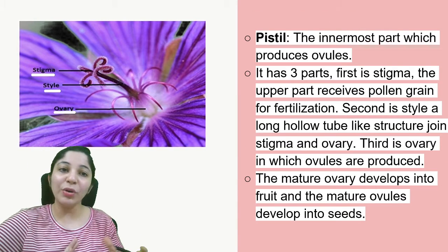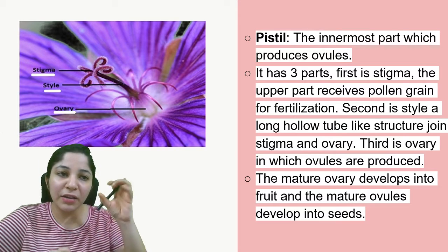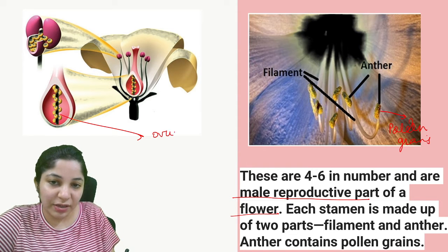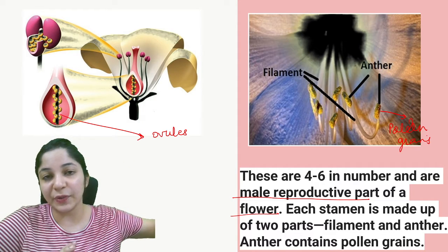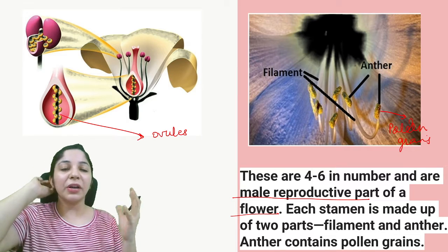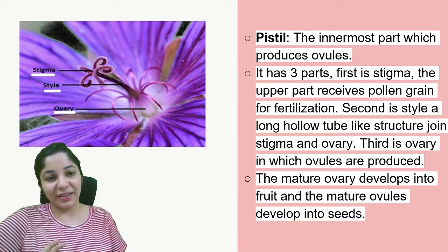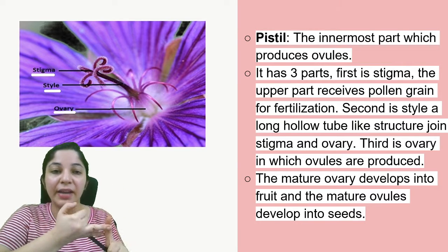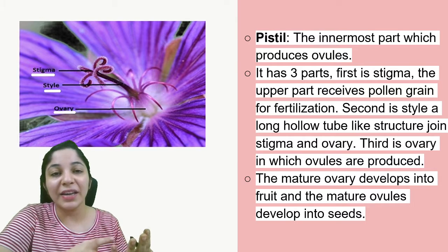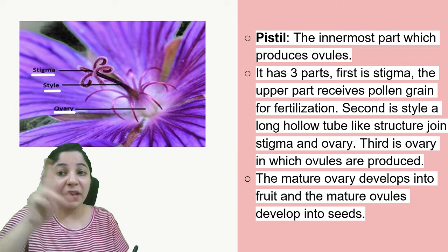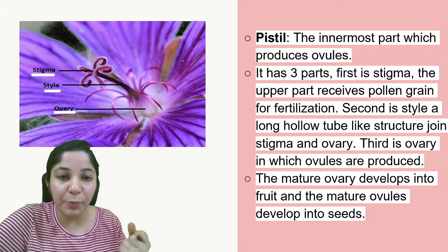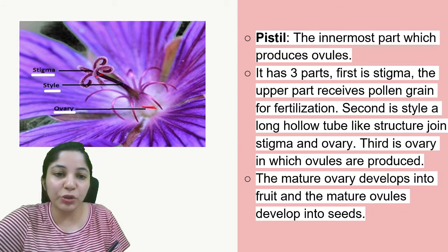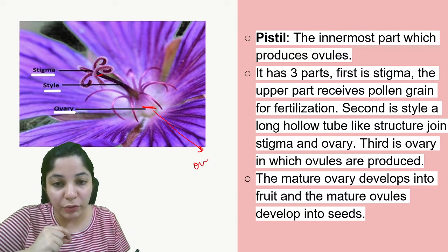Now let's talk about the pistil — the innermost part, which produces ovules. The male reproductive pollen grains need to be transferred to the ovary of the pistil so that reproduction of the flower will happen. The pistil contains three parts: stigma, style, and ovary. The stigma is the upper part that receives the pollen grains for fertilization. The style is the tube-like structure that joins the ovary and the stigma together. The third part is the ovary, which produces the ovules.